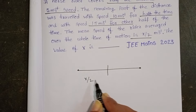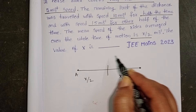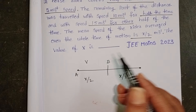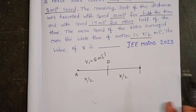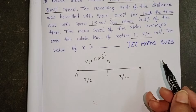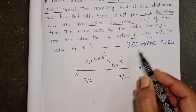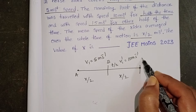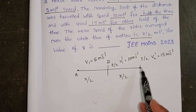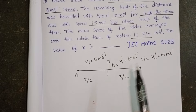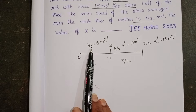Let us take the first part of the distance as x by 2, and the next remaining part is also x by 2. This first part is covered with a speed of 5 meter per second, and the remaining half part is travelled in equal time intervals. Observe this diagram carefully — the first part is travelled with speed 5 meter per second.